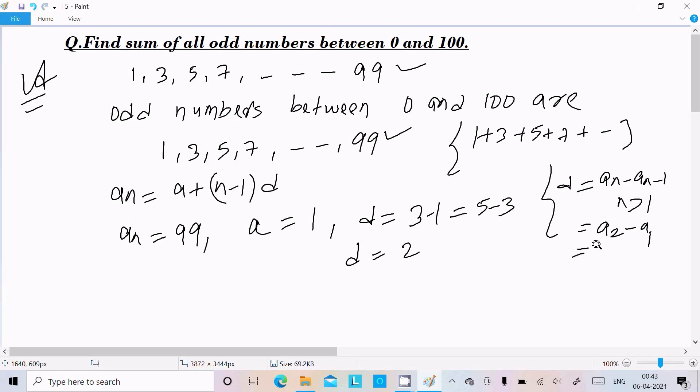Therefore d = 2, where d is the common difference and a is the first term.